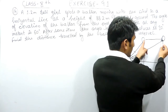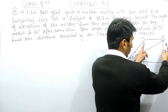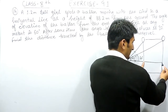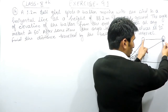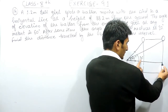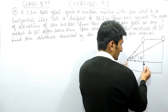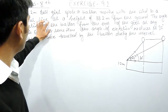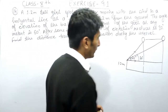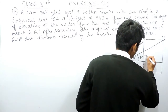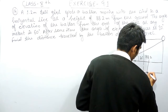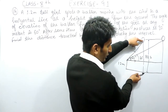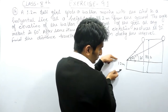You need to find the distance which this balloon has travelled during this interval. To find this, first find BE, then subtract BC — the remaining will be the answer. It is given that the balloon is at a height of 88.2 meters from the ground, so the height of this balloon from the ground is 88.2 meters.